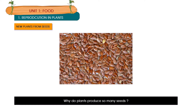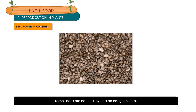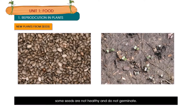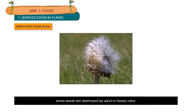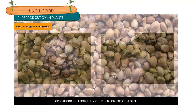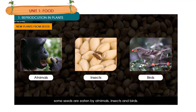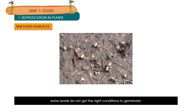Plants produce many seeds because not all seeds grow into new plants. Some seeds are not healthy and do not germinate. Some seeds are destroyed by wind or heavy rain. Some seeds are eaten by animals, insects and birds. Some seeds do not get the right conditions to germinate.